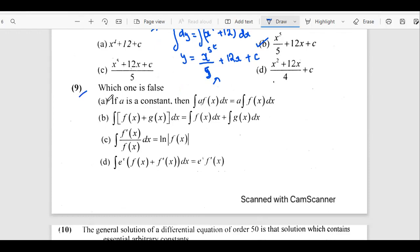So in the ninth question, which one is false. If a is a constant, then integration of a into f(x) equals the first one. Then the second one says integration of f(x) + g(x). So this is correct because we're looking for the false one. And the last one: integral of f'(x) times e^x. So f(x) + f'(x) basically gives us e^x into f(x). This is false.